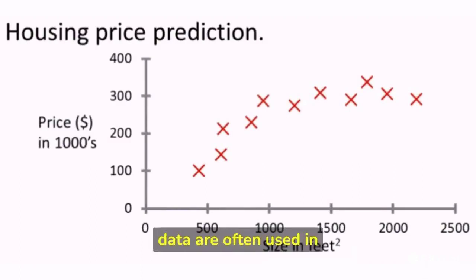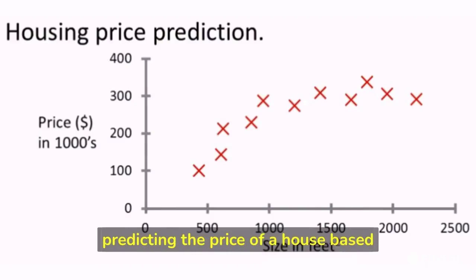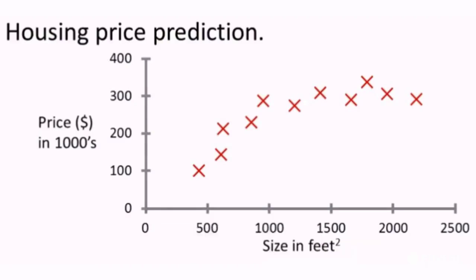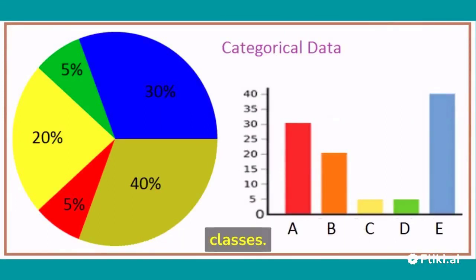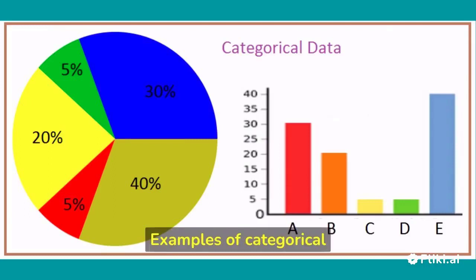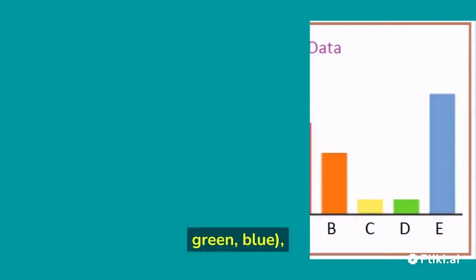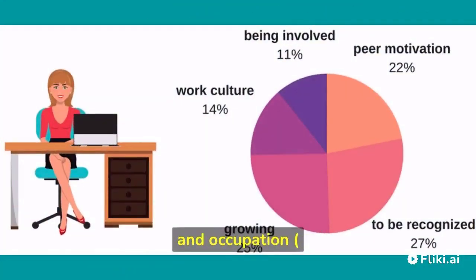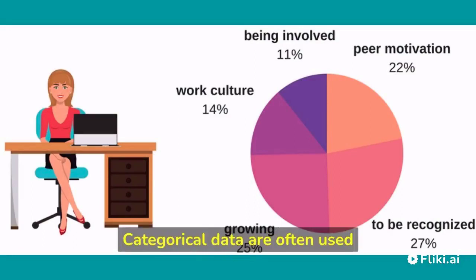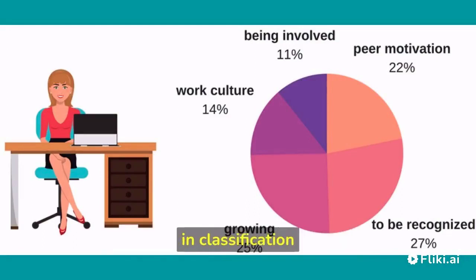Continuous data are often used in regression problems, such as predicting the price of a house based on its square footage. Categorical data are non-numerical values that can be divided into categories or classes. Examples include color (red, green, blue), gender (male, female), and occupation (teacher, doctor, engineer). Categorical data are often used in classification problems, such as identifying the type of flower in an image.